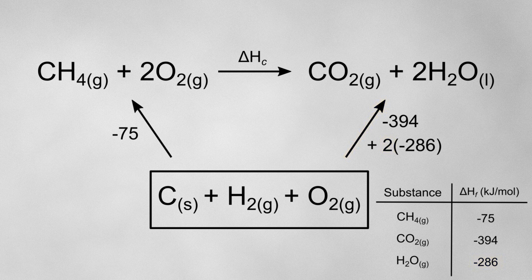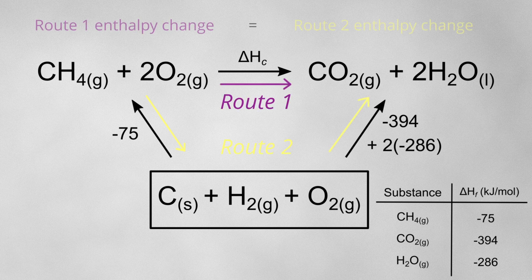Here's where it can get confusing. At school, you were probably taught that to find an alternative route, you should start at the reactants, go down to the box at the bottom, and then up the other side. You then need to find the total enthalpy change for both routes and equate them in order to find the missing enthalpy change.